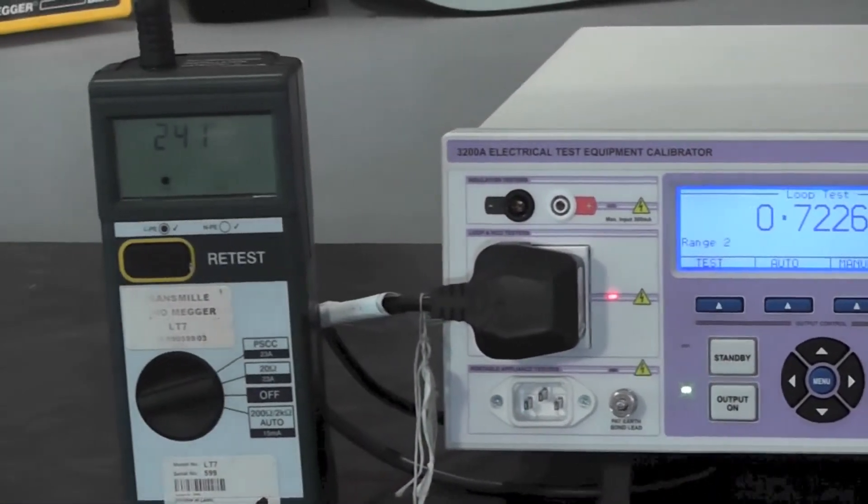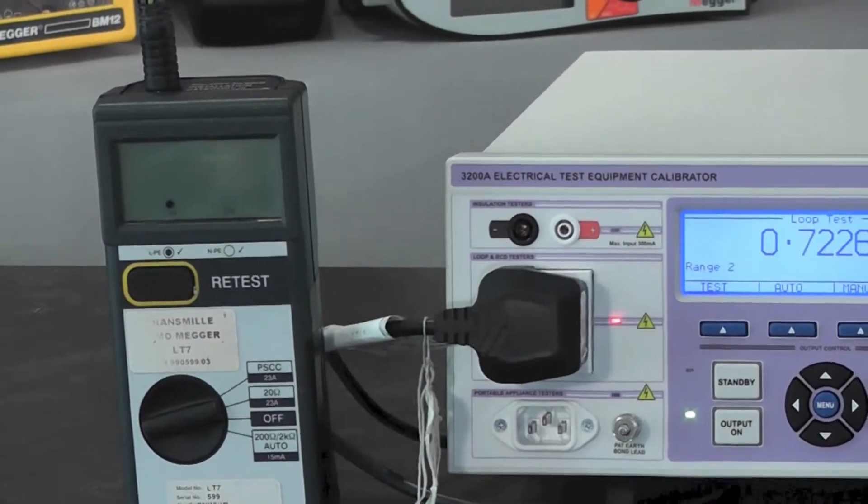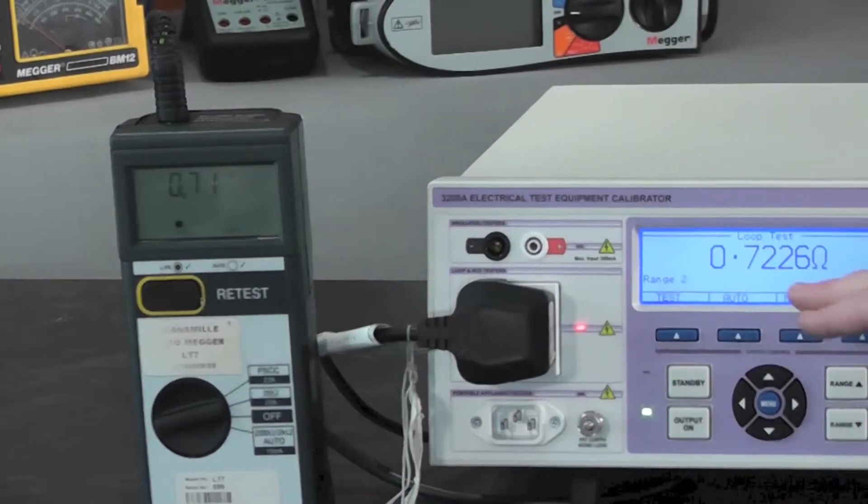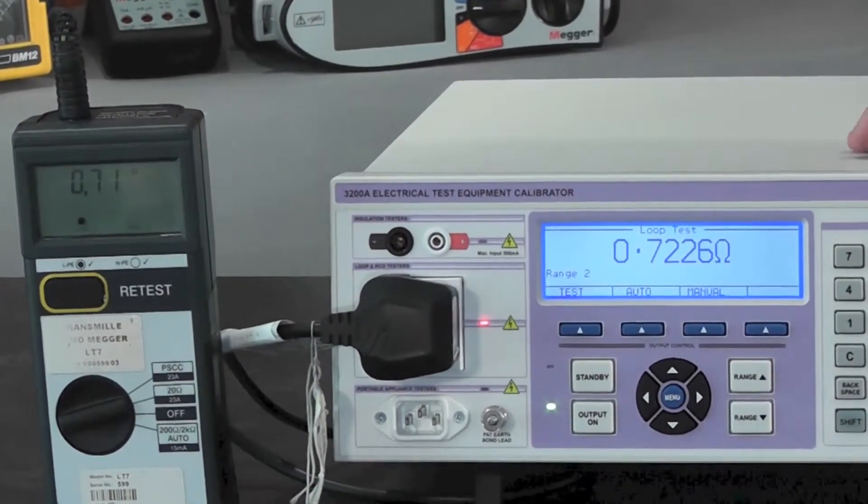After waiting for the loop tester to initialize, compare the recorded result from the loop tester adapter against the indicated value on the 3200A.